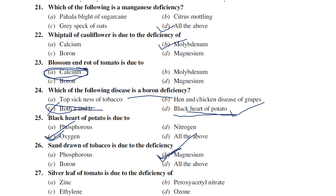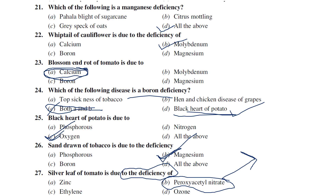Silver leaf of tomato is due to the toxicity of peroxyacyl nitrate (PAN) — it is not a deficiency but a toxicity. Due to this pollutant, a disease called silver leaf of tomato is observed. PAN toxicity causes silver leaf of tomato — this is a very important point.